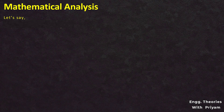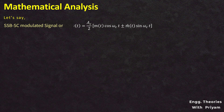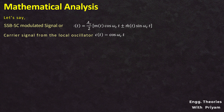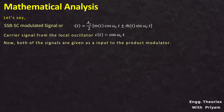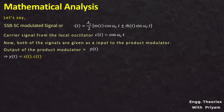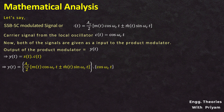The SSBSC modulated signal is given by s(t) = (Ac/2)[m(t)·cos(ωc·t) ± m̂(t)·sin(ωc·t)], where m̂(t) is the Hilbert transform of the message signal m(t). The carrier signal from the local oscillator is c(t) = cos(ωc·t). The output of the product modulator y(t) = s(t)·c(t), which becomes y(t) = (Ac/2)[m(t)·cos(ωc·t) ± m̂(t)·sin(ωc·t)]·cos(ωc·t).